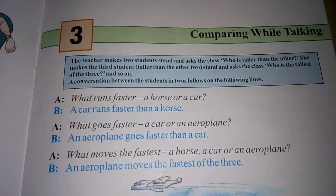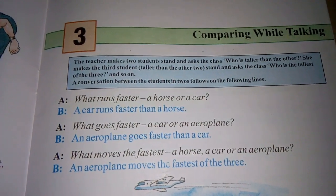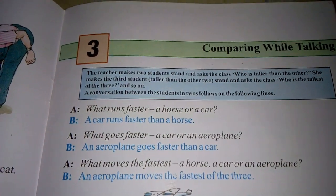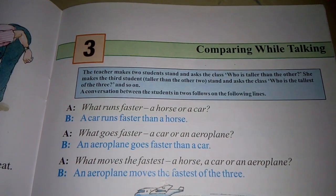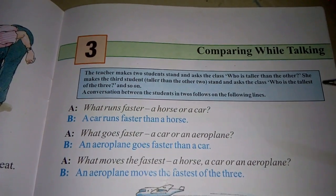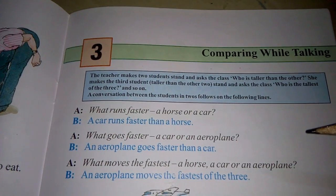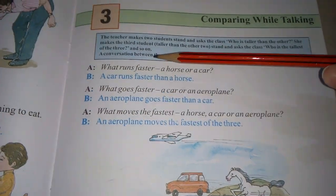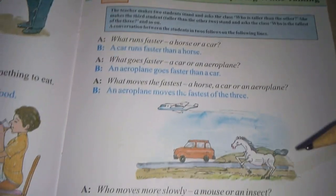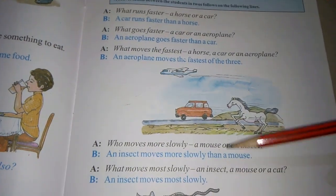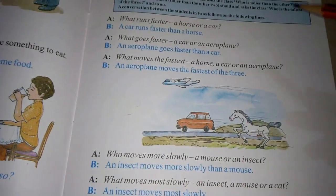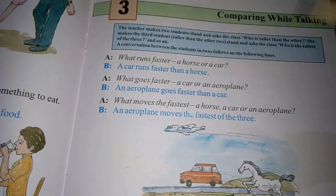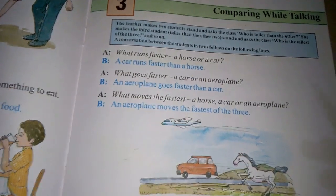A warmly good morning to all of you. I hope you all are well. Today we will going to start our third lesson of conversation, that is comparing while talking. In this lesson we will learn the comparison between things by using degrees of comparisons like Fast, Faster, Fastest, Slowly, More Slowly, Most Slowly, etc. These all are the degrees of comparison. So let's get started.